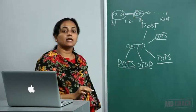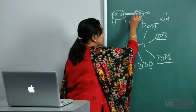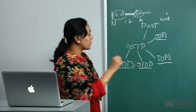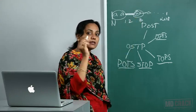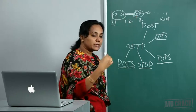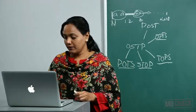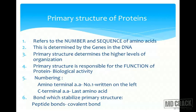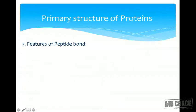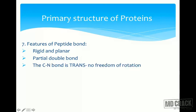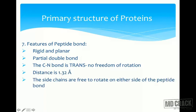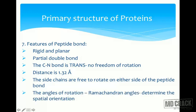The bond between two amino acids that stabilizes the primary structure is the peptide bond — a covalent bond. Further features of the peptide bond: it is rigid and planar, has partial double bond character, and the C–N bond is trans in nature with no freedom of rotation. The bond distance is 1.32 Ångströms. The side chains are free to rotate, and the angles of rotation are called the Ramachandran angles, which determine the spatial orientation of the peptide.